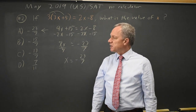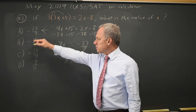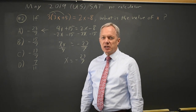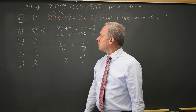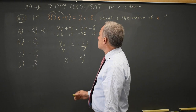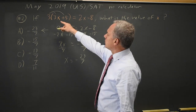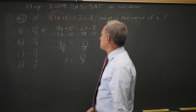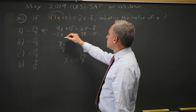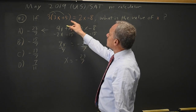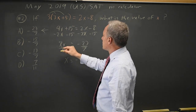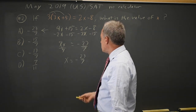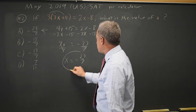Anytime I get fractions like this, unless it's multiple choice where everything is ugly fractions, I'm likely to check for careless errors. Looking through this, I remember to distribute the 3 to both terms inside the parentheses — there are no negatives to drop there. 9x minus 2x is 7x, negative 8 minus 15 is negative 23. So I have solved this correctly.